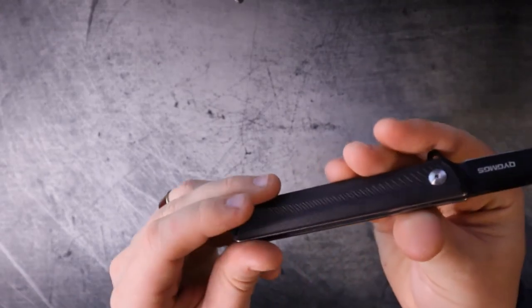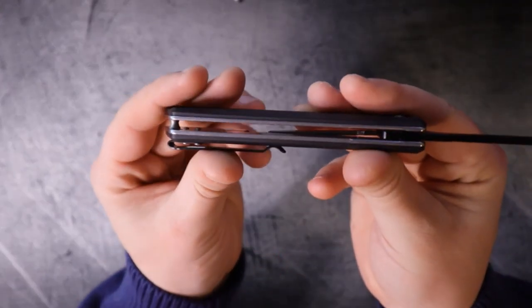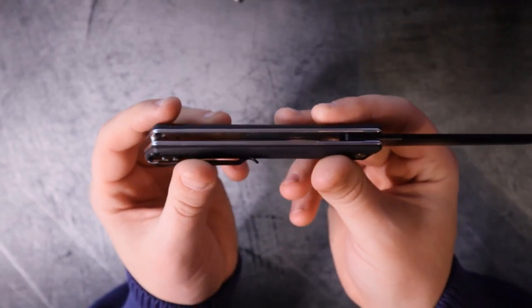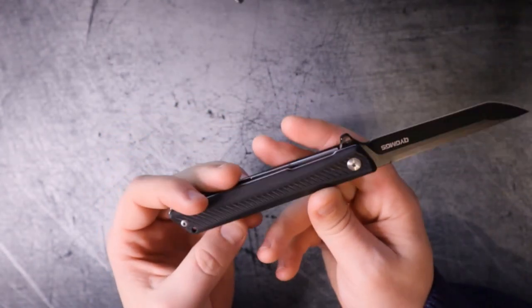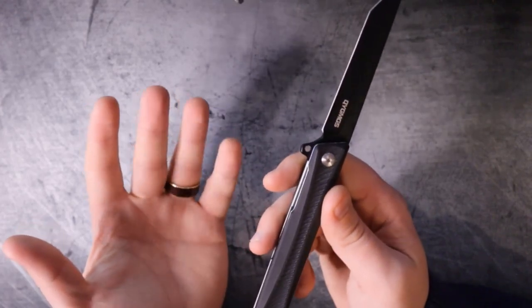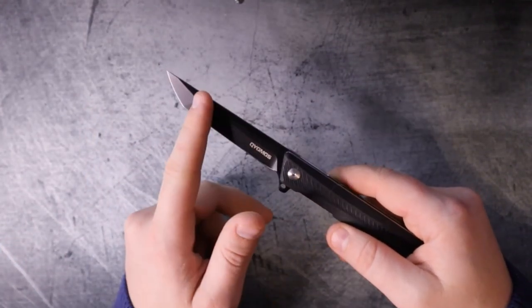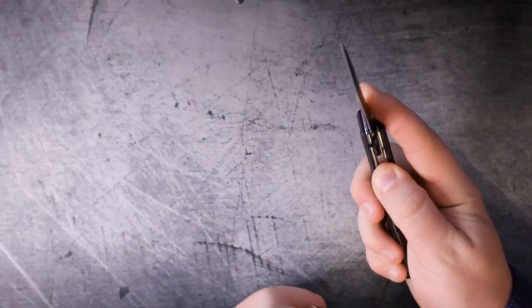Now, when we looked on the inside, you'll notice that there are no cutouts for weight relief. That's definitely something that they could have done to put this down in the 3.5 ounce range. And that would have been perfect for the blade to handle ratio.